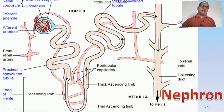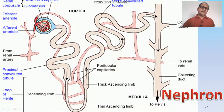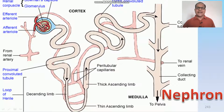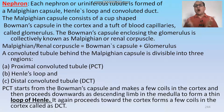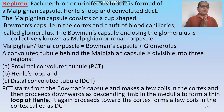The nephron is the tubular uriniferous tubule, and hundreds or thousands of nephrons are found in one kidney, in the form of cortical Malpighian granules. It is composed of a Bowman capsule, a glomerulus network of blood capillaries, a proximal convoluted tubule, a distal convoluted tubule or DCT, which connects to the collecting duct. Each nephron or uriniferous tubule is formed of the Malpighian capsule, Henle's loop and convoluted tubule. The Malpighian capsule consists of a cup-shaped Bowman capsule in the cortex and a tuft of blood capillaries called the glomerulus. Bowman capsule enclosing the glomerulus is collectively known as the Malpighian or renal capsule.